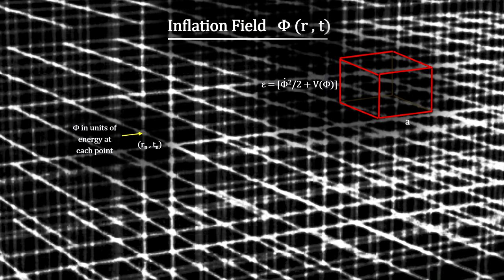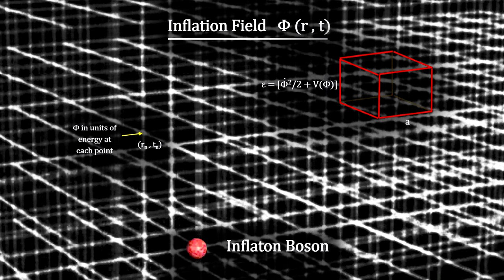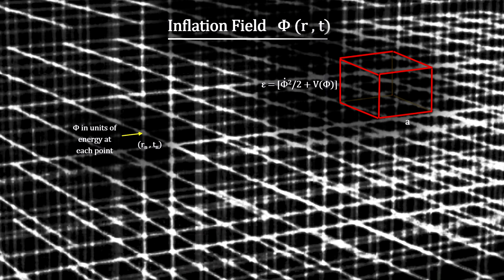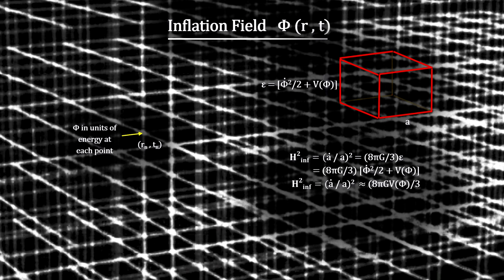The field is called the inflation field, and its force particle is called an inflaton. If we assume that this large potential energy isn't changing appreciably, the large Hubble parameter would be constant and, as we have seen before, the universe would expand exponentially.